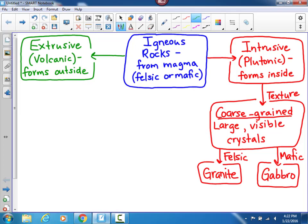They form outside the surface of the earth. There are three different kinds of textures that you can get with an extrusive rock.